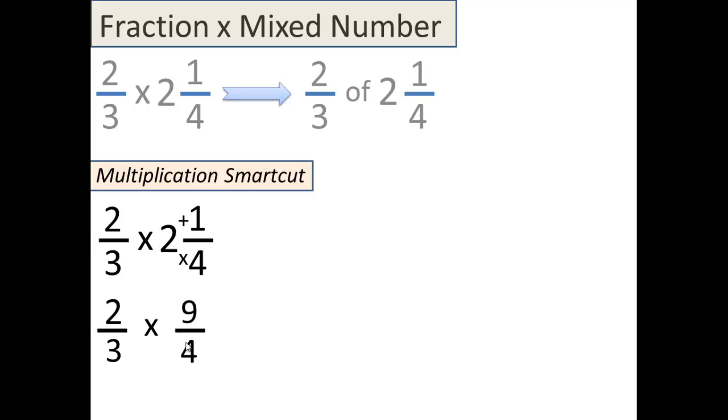And now, because we've made it an improper fraction, we can just shoot, shoot. So 2 times 9 gives you 18, and 3 times 4 gives you 12. That's 18 over 12.